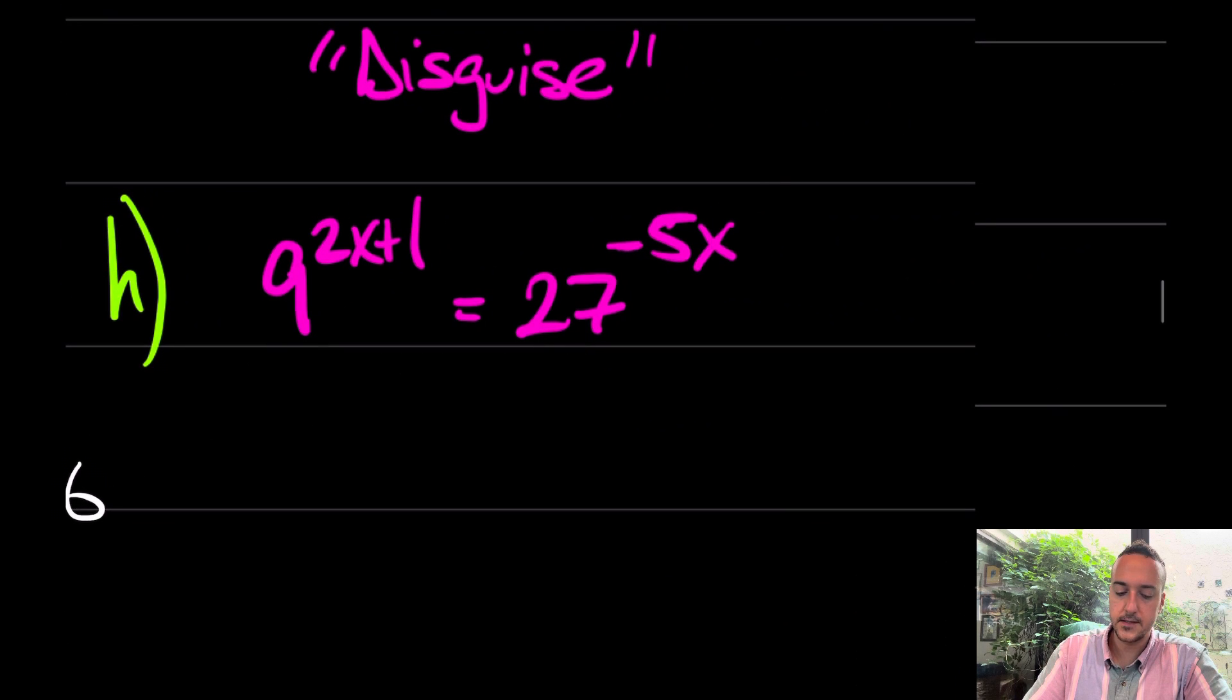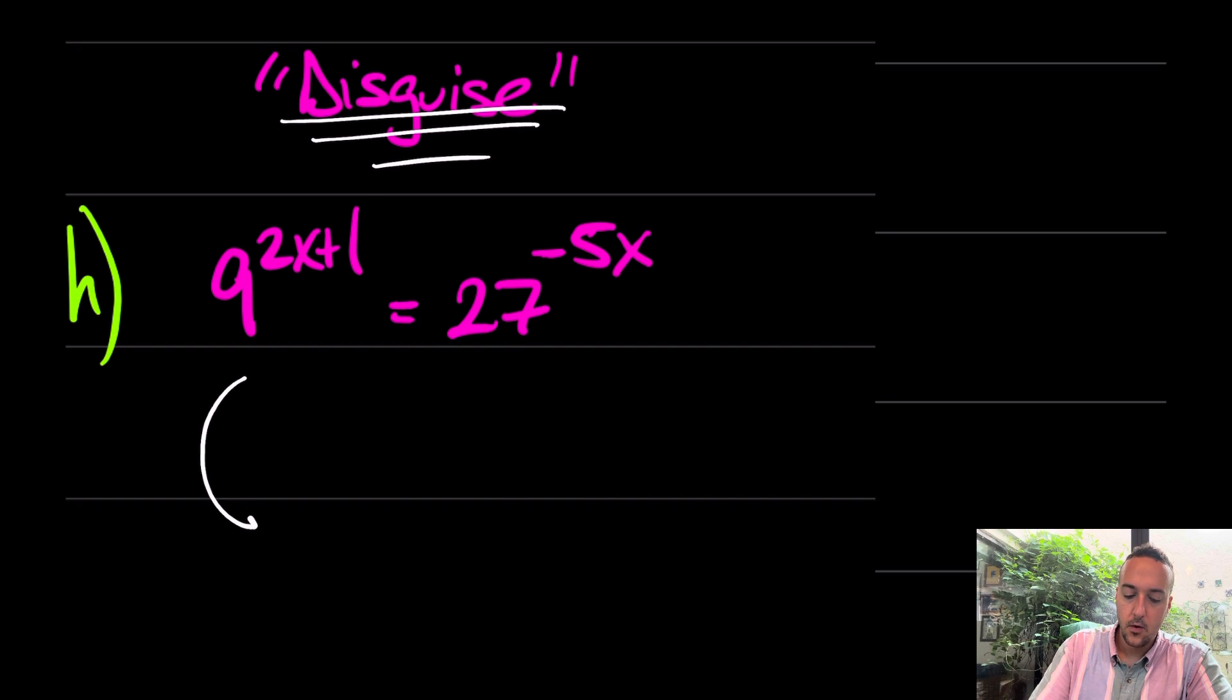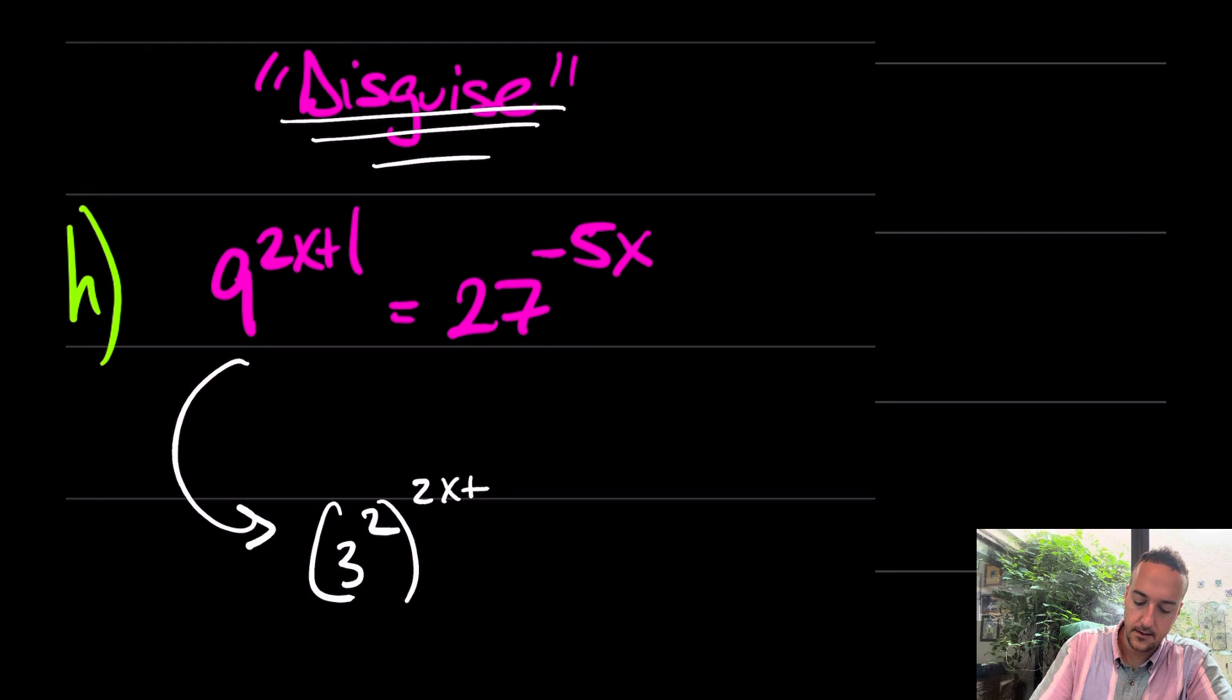I do want to take a look at this one because this is one that shows up on the ACT all the time. I call this skill the skill of disguise. Why? Because nine isn't really nine. Nine is actually three to the second to the two x plus one. And just like that, what do you think 27 is? 27 isn't really 27. 27 is actually in disguise as well. It's three to the third to the negative five x.